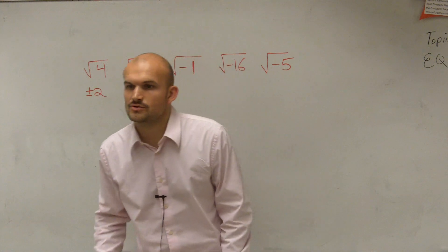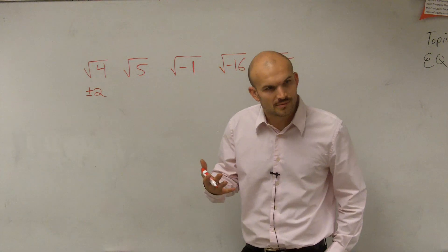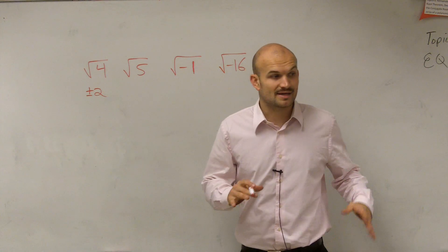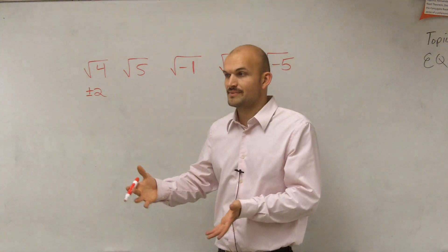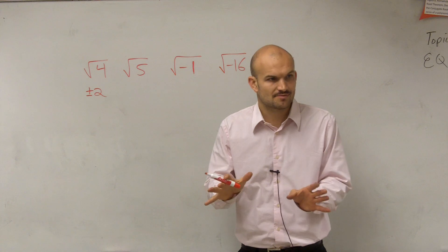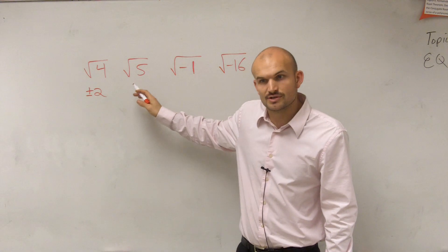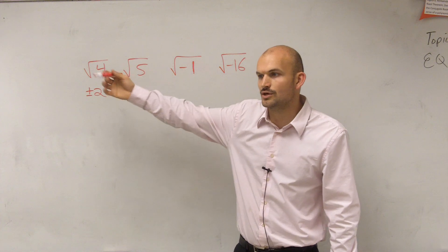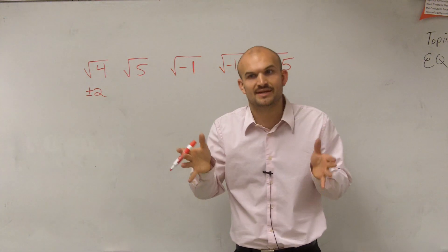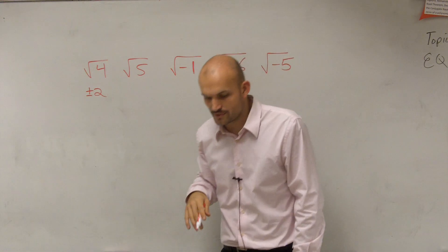Now let's look at the square root of five. Do I have a whole number that I can multiply by itself to give us five? No. So usually in mathematics, unless we ask you to approximate, we leave it as the square root of five. We don't want to give the decimal because this is what we call an irrational number — the decimal goes on forever. We want the exact value, so we leave it as the square root of five.